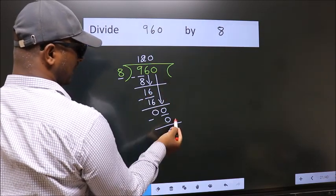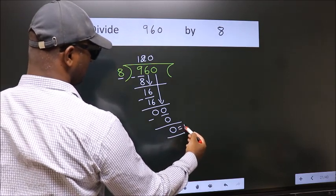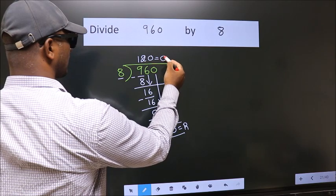No more numbers to bring it down. So, we stop here. This is our remainder. This is our quotient.